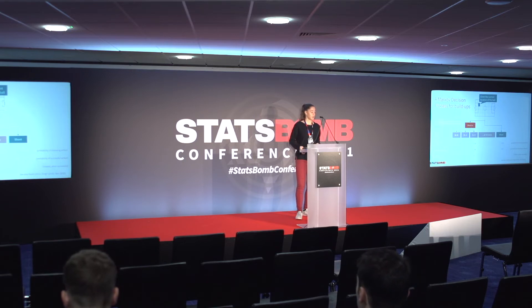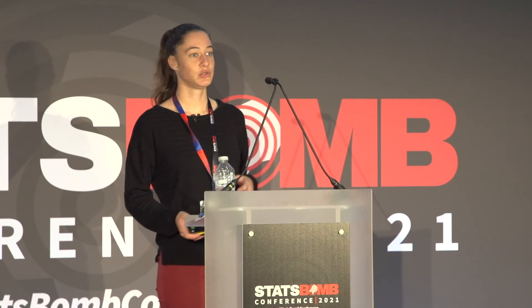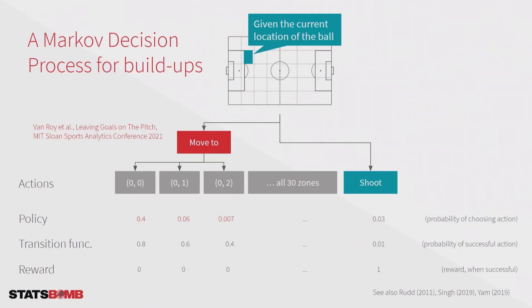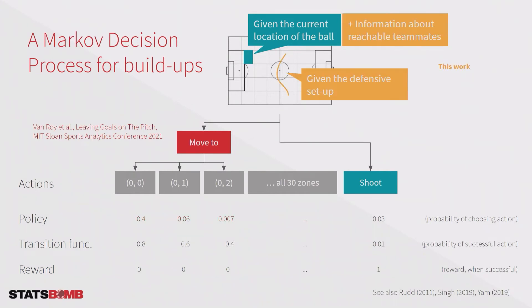In earlier work at Sloan we changed the general move action to a move-to action, including the intended end location of a pass into the model. This allowed us to analyze the decision making of teams — for shooting decision making and now also for buildups. To analyze buildups and defensive structures we also need to include the given defensive setup used by opponents and more fine-grained information about reachable teammates: who was reachable and who was blocked at each state of the game.